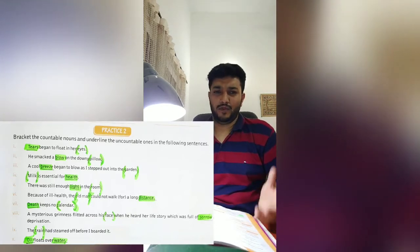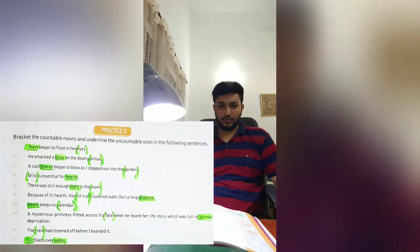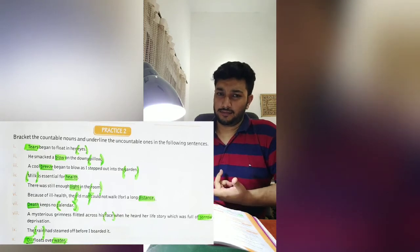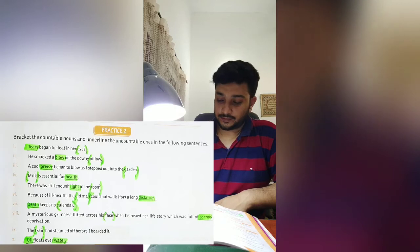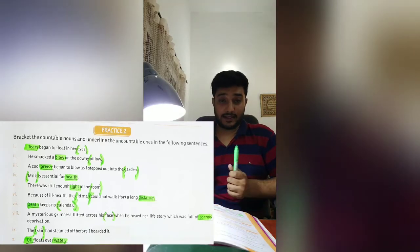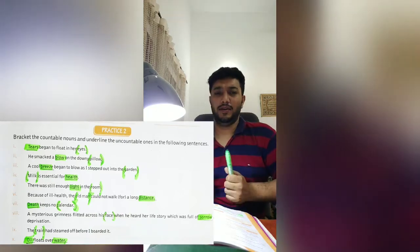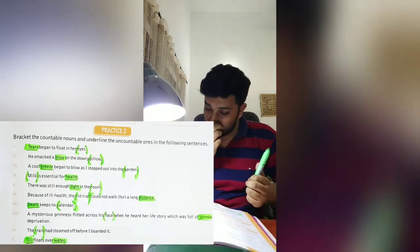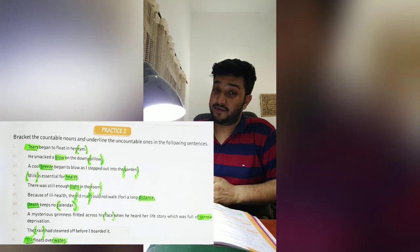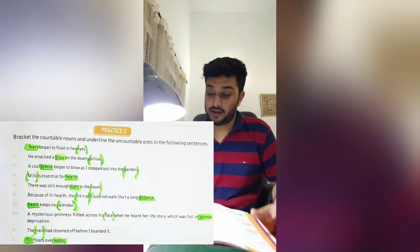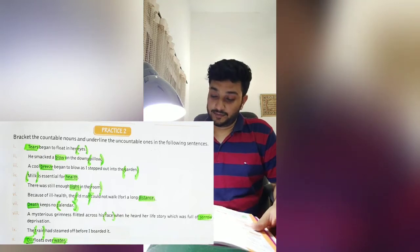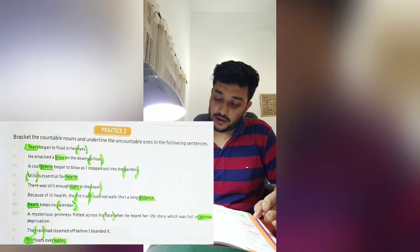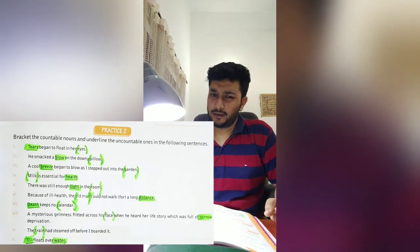'Death keeps no calendar' — what do you think is the uncountable noun? Death — you are right. Calendar is a countable noun. Now: 'A mysterious grimness flitted across his face when he heard her story which was full of sorrow and deprivation' — face is a countable noun, and sorrow — yes, you are right — sorrow is the uncountable noun.